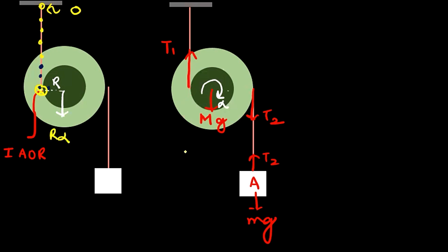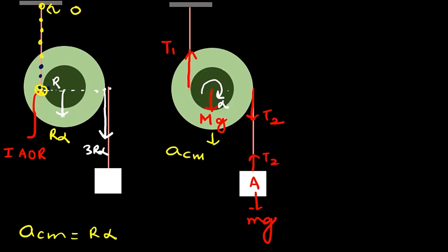The center of mass acceleration a_cm equals r·alpha. Now, the point of the pulley where mass A is attached is at a distance r plus 2r = 3r from the IAR. So that point has acceleration 3r·alpha. Since the string doesn't slip, block A also has the same acceleration: a_A = 3r·alpha.